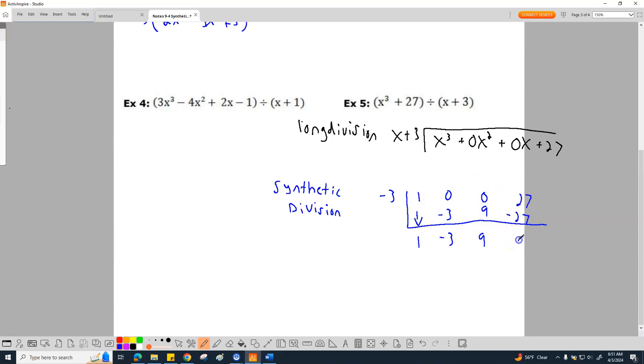27 minus 27 is 0. Awesome. We have a 0 remainder. So let's go ahead and do this. So how do I write this out?